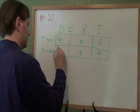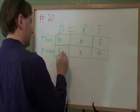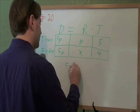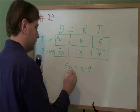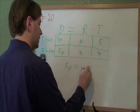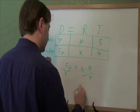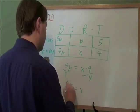And then from here, we'll turn this second line into an equation. 5p equals x times 4. Remember what we're looking for is x. We want x by itself. So to get rid of this times 4, we divide by 4. And we get x equals 5p over 4.